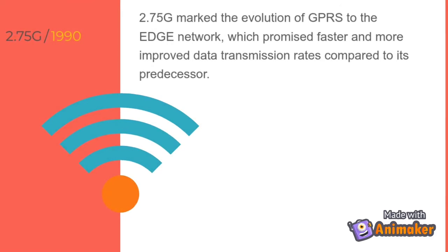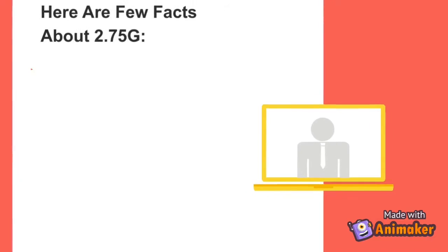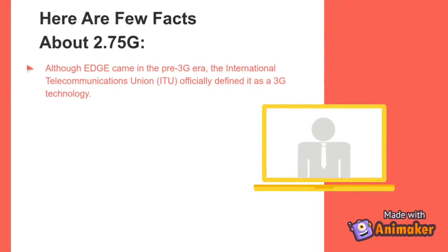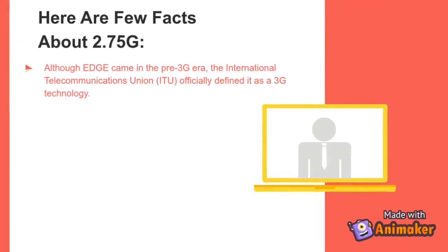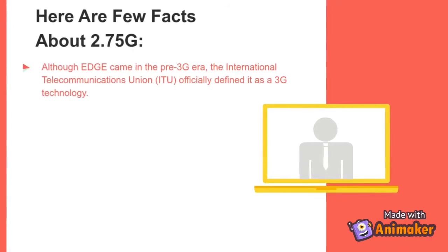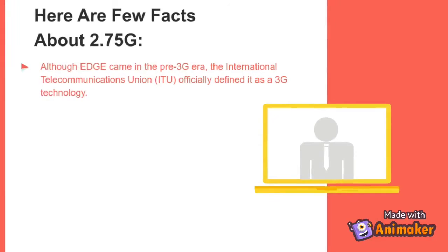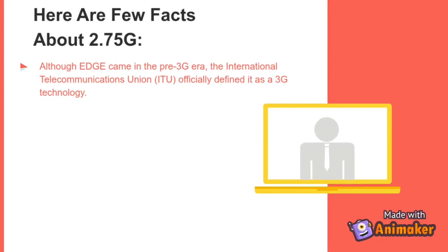2.75G marked the evolution of GPRS to the EDGE network, which promised faster and more improved data transmission rates compared to its predecessor. Although EDGE came in the pre-3G era, the International Telecommunications Union (ITU) officially defined it as a 3G technology.